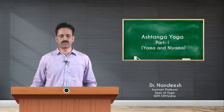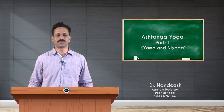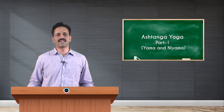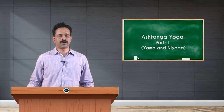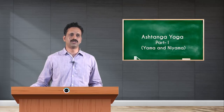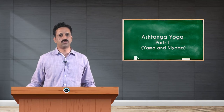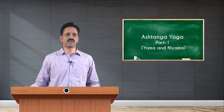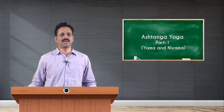Hello students, welcome to the session. Today my topic is Ashtanga Yoga. The Ashtanga Yoga has been divided into two forms: one is 'Ashta,' that is eight, and 'Anga' means the limbs. So joining together, it is called as the eight limb path.